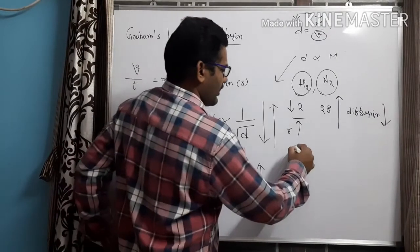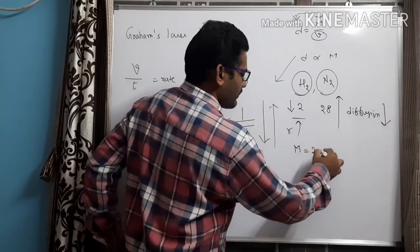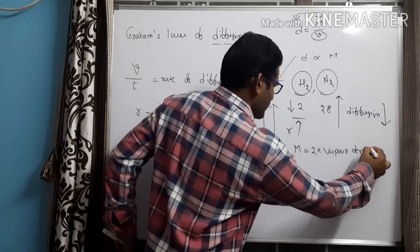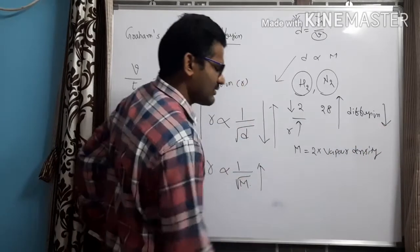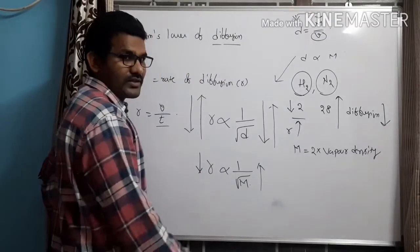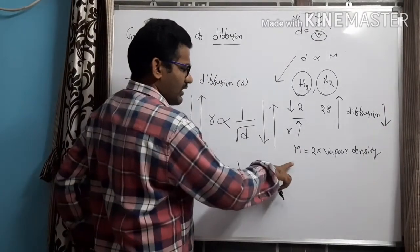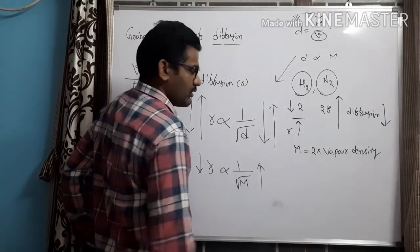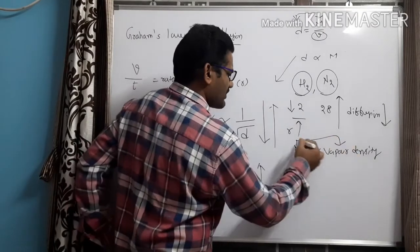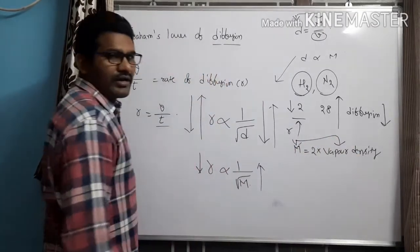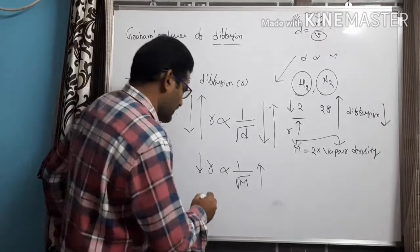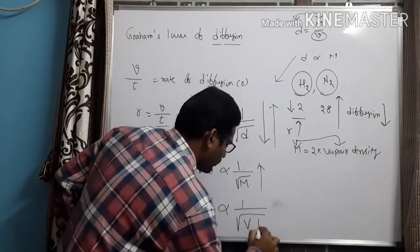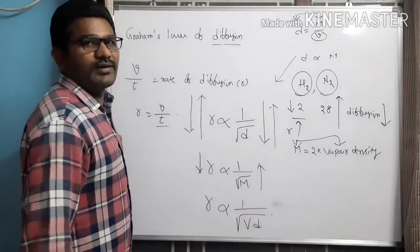Experimentally, it was observed that molecular mass will be double that of vapor density. Molecular mass of a gas will be double that of its vapor density, meaning molecular mass and vapor density are directly proportional to each other. So I can rewrite the equation as R proportional to 1 by root Vd, where Vd is the vapor density.